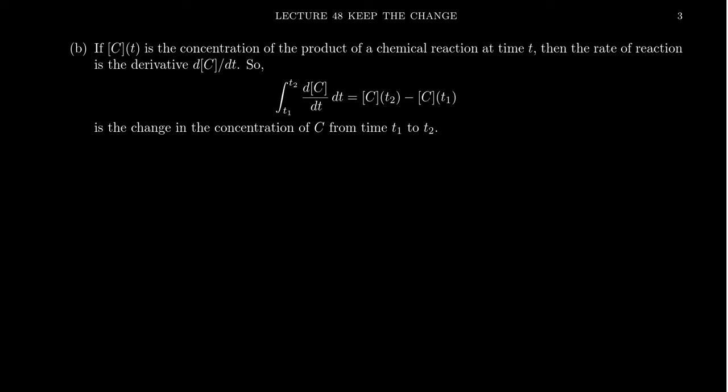If we integrate said derivative, if we take the integral of the rate of the reaction with respect to time from time stamp 1 to time stamp 2, then this gives us the net change in the reaction. It's the change in the concentration over time. So if you integrate the change of concentration with respect to time, you'll get the net change in concentration.